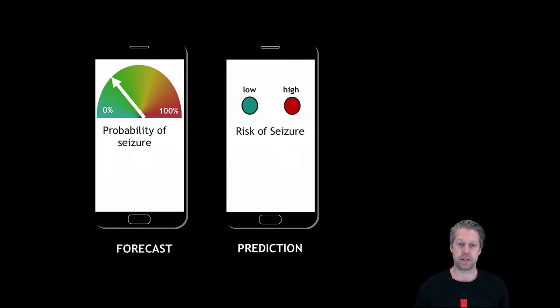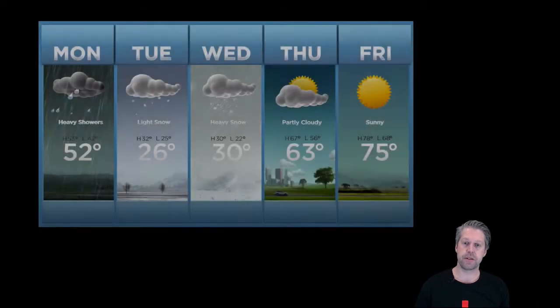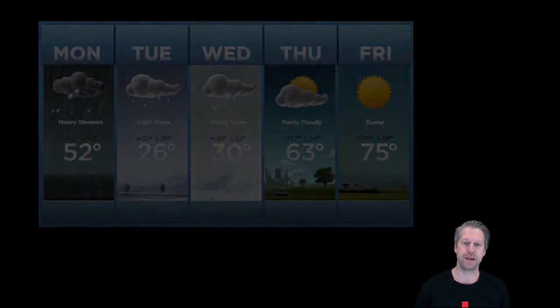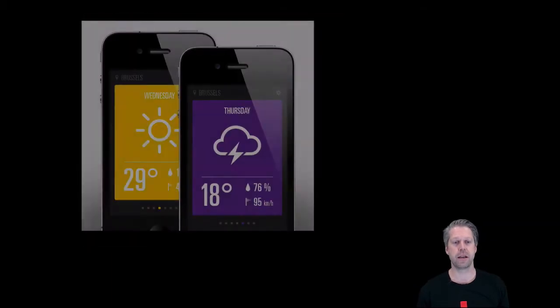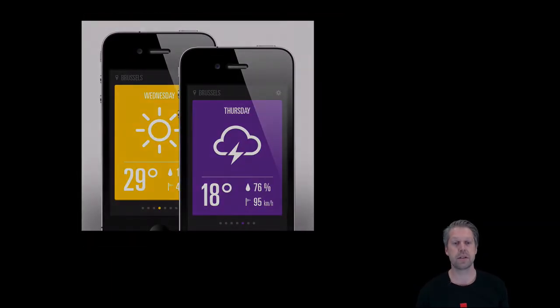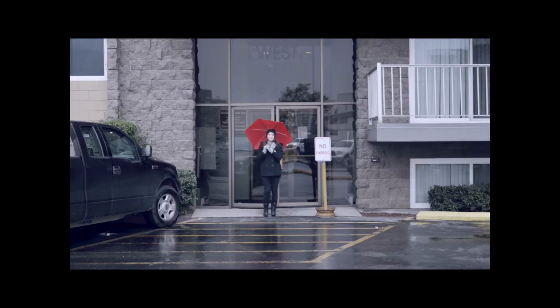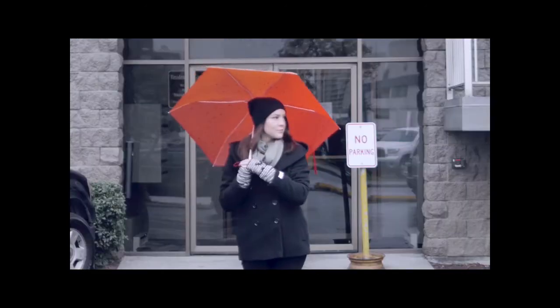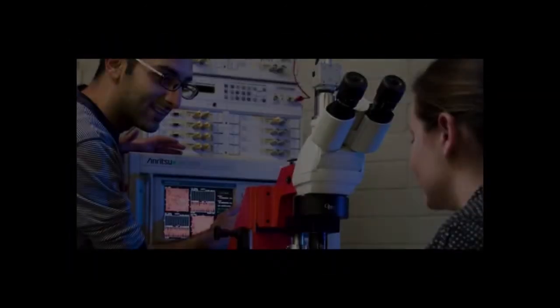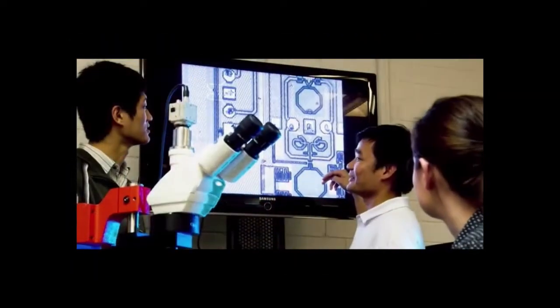Forecasting seizures is intuitively understood by considering the weather app on your smartphone. Each morning it reports a probability of rain. If the probability is high enough, say 80%, you decide to bring an umbrella to work. Two times out of ten you won't need the umbrella, but the main point is the probability forecast should be trustworthy. Our research aims to deliver a trustworthy seizure forecast.